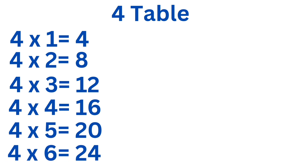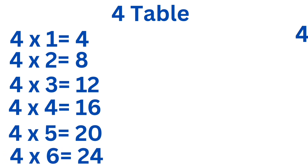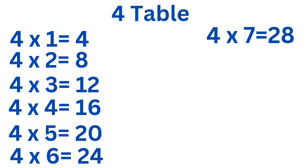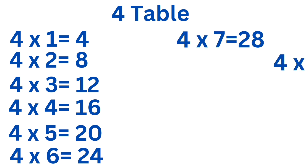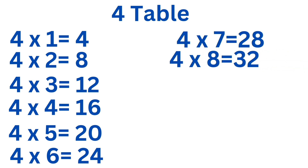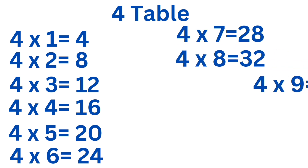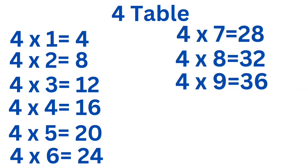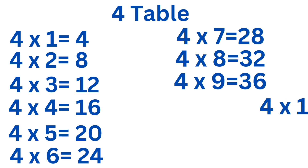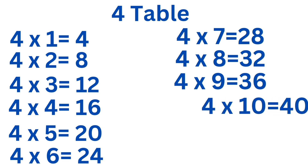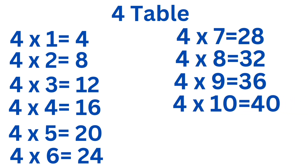Four sixes are twenty-four. Four sevens are twenty-eight. Four eights are thirty-two. Four nines are thirty-six. Four tens are forty.